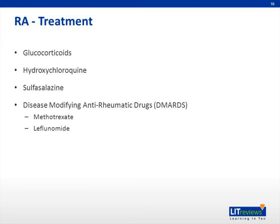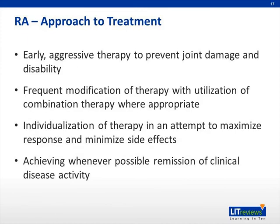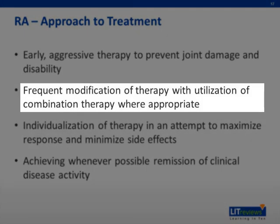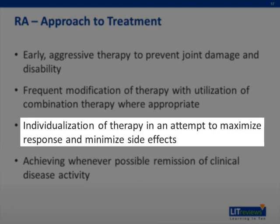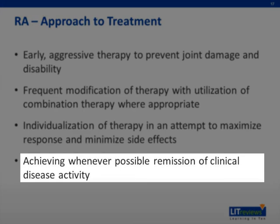The newer group of drugs fall under the heading of biologic DMARDs and include subcutaneous or intravenous agents designed to specifically target cytokines or cell surface markers that play a significant role in RA pathophysiology. More important than the specific drug chosen is the strategic approach to treatment of RA. Early aggressive therapy has been demonstrated to prevent joint damage and disability. Current RA treatment involves frequent modification of therapy, including combination pharmacotherapy when appropriate. One must also individualize therapy to maximize response and minimize side effects, and attempt to achieve complete remission of disease when possible — a goal uncommonly accomplished before the advent of newer biologic agents.